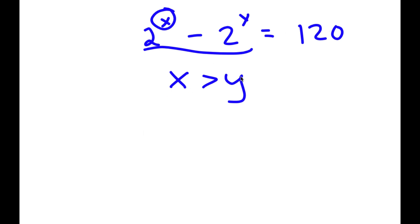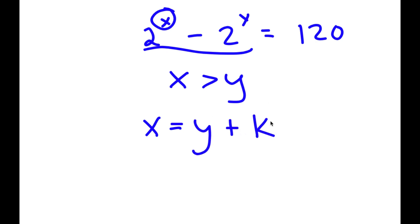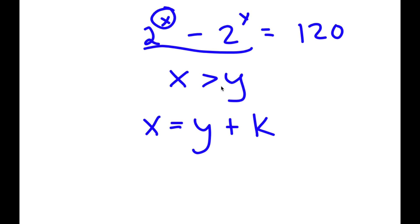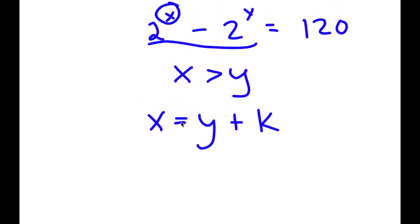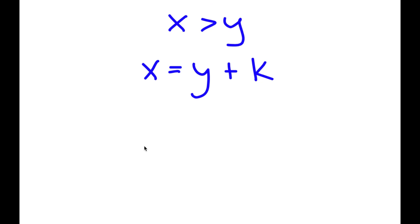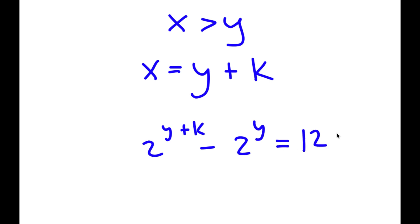If x is greater than y, then x is going to equal y plus some constant k. So now, if I go ahead and replace x with y plus k, I get 2 to the power of y plus k minus 2 to the power of y is equal to 120.